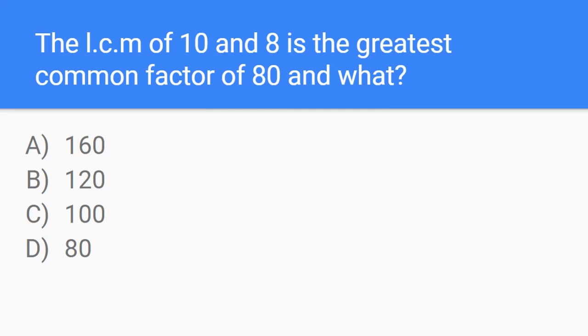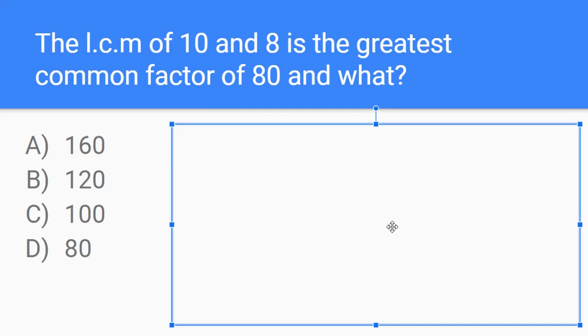The next question is, the LCM, or least common multiple, of 10 and 8 is the greatest common factor of 80 and what? So let's find the least common multiple of 10 and 8. So we know one multiple, common multiple, can be 80, because if we multiply 10 and 8, we'll get you 80.